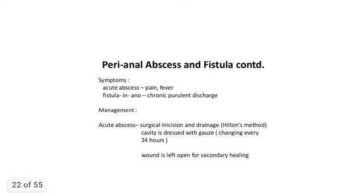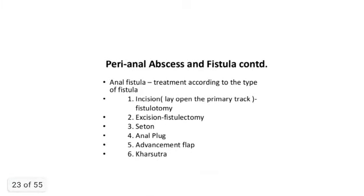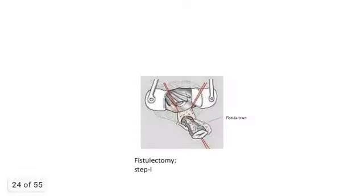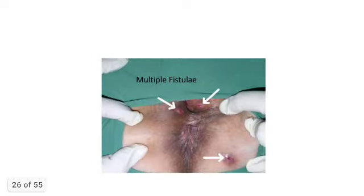Symptoms of acute abscess include pain and fever; chronic fistula presents with purulent discharge. For acute abscess, treatment is surgical incision and drainage by Hilton's method, with the cavity packed with gauze changed every 24 hours and the wound left open for secondary healing. A special mention is Goodsall's rule. Treatment of fistula is according to type: lay open the primary tract (fistulotomy), excision, seton, anal plug, advancement flap, and coring out. Fistulectomy is complete excision of the fistula tract followed by closure.